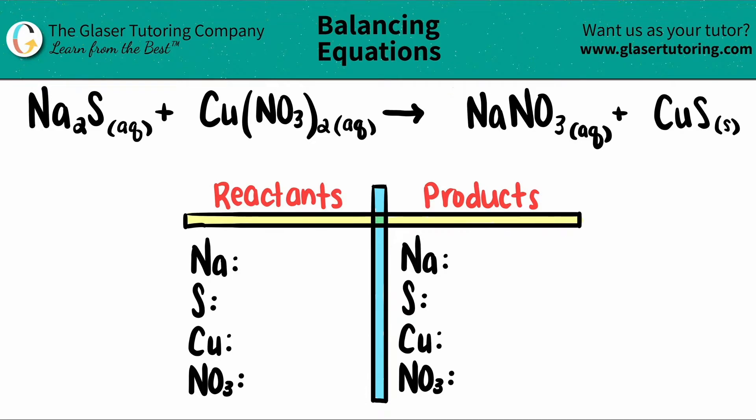Today, we're going to be balancing the equation of sodium sulfide, which is Na2S, plus copper 2 nitrate, which is Cu(NO3)2.